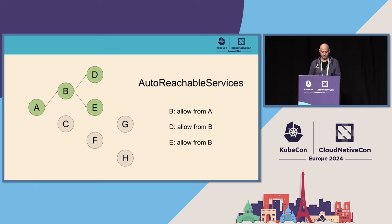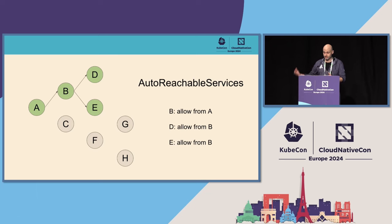The first feature I want to talk about is called auto-reachable services. When your service mesh is really big and you have a lot of Envoy configurations going over the network, this can get really heavy on the network, CPU, and memory. Up until now, you had to manually define which services your service is consuming, and then the service mesh would only send over this configuration. But right now, if you use mesh traffic permissions and auto-reachable services, this will be automatically figured out and you get the performance benefit pretty much for free.